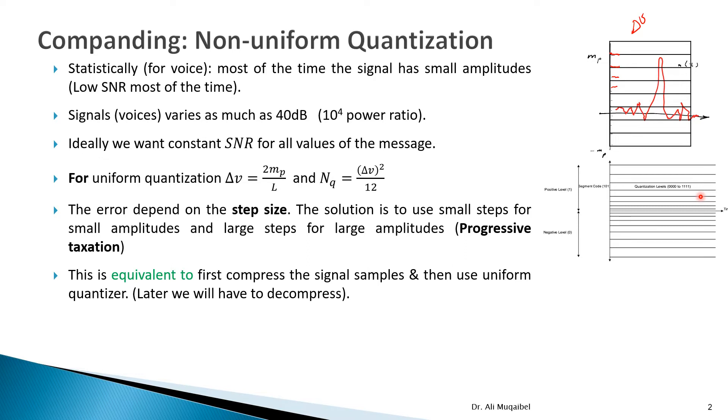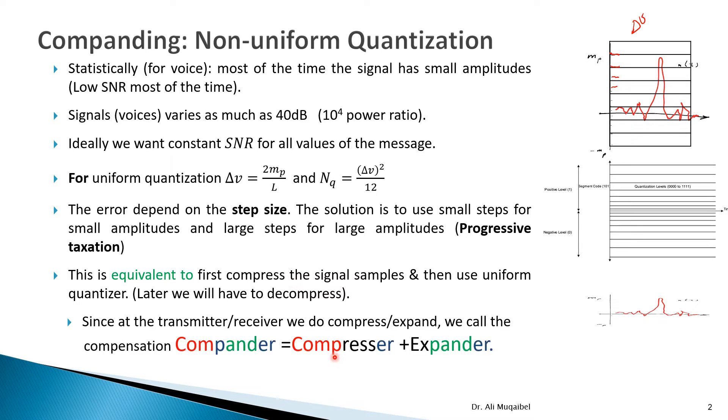This is equivalent to first, instead of changing our quantizer, another thing to do is I will take this signal and compress the signal in terms of amplitude. So I will still be using uniform quantizer like original one, but I will compress the signal. So one way or another, either you use non-uniform quantization or you compress the signal and use uniform quantizer. This is equivalent to first compressing the signal and then use uniform quantizer. Later, we will have to do, of course, the opposite to get the signal back to as it used to be. That's called decompress. Notice the word compress or decompress here is in terms of the amplitude.